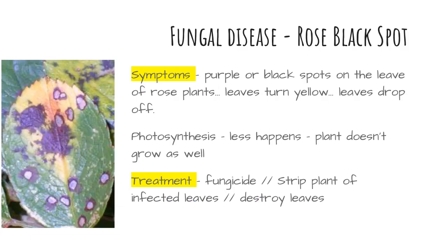Rose black spot is a fungus that causes purple or black spots to develop on the leaves of rose plants. The leaves can then turn yellow and drop off. This means that less photosynthesis can happen, so the plant doesn't grow very well.